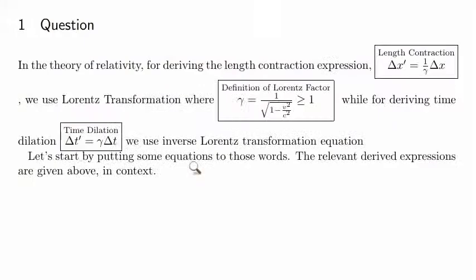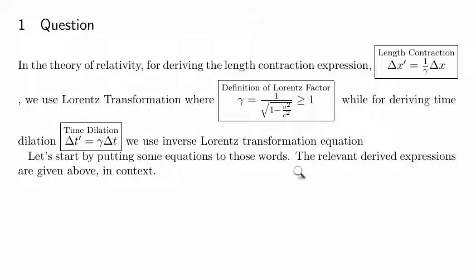Let's start by putting some equations to those words. The length contraction expression is delta x prime equals 1 divided by gamma times delta x, where gamma is 1 divided by the square root of 1 minus v squared over c squared, and that number happens to be greater than or equal to 1 and gets bigger as v increases.